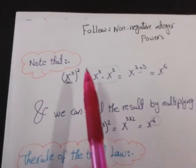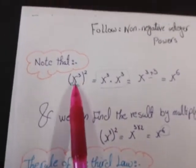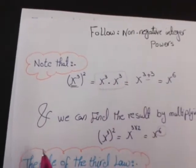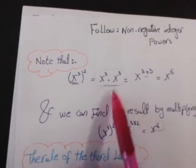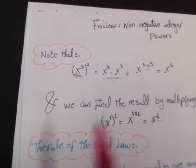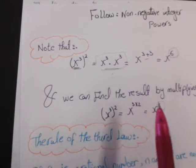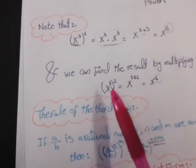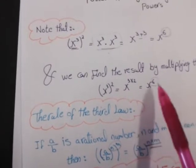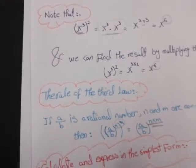If I have x power 3, all to the power 2, that means I have x power 3 times x power 3. In case of multiplication we add the powers: x power 3 plus 3 gives me x power 6. We note that the power 6 can be found by multiplying the powers: x power 3 all to the power 2, we make 3 times 2 and it gives me 6. We can apply this method in case of a fraction or rational number.